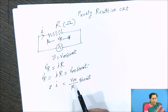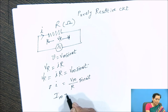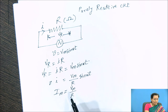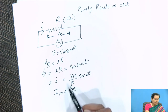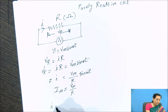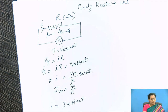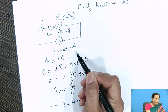In this equation, Vm by R represents the maximum current Im. So we can write Im equal to Vm by R. By replacing Vm by R with Im in this equation, we can write the current equation as I equal to Im sine omega t.